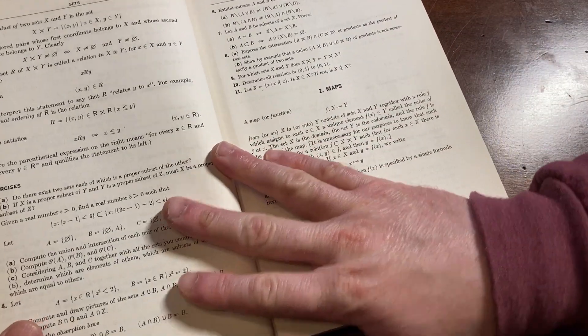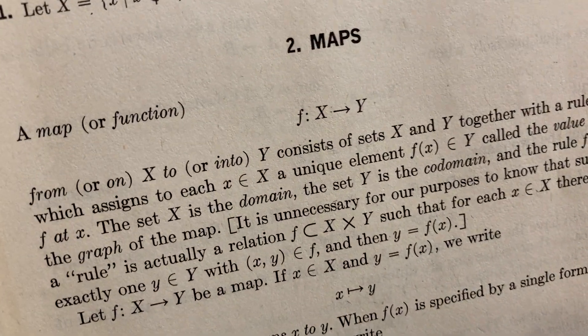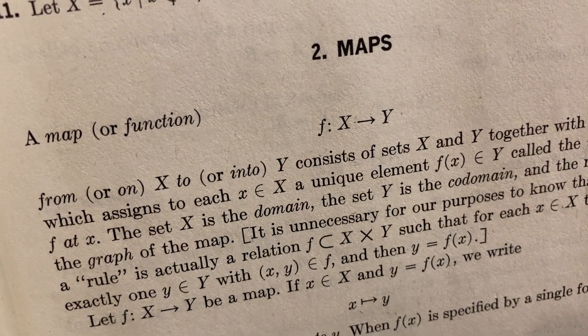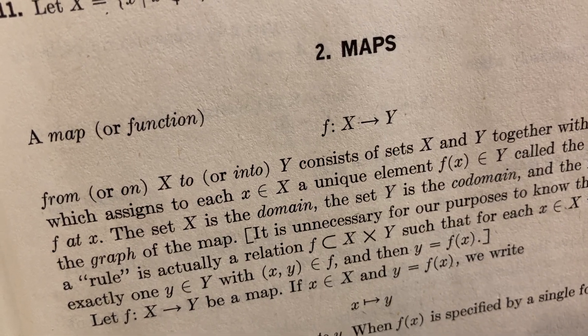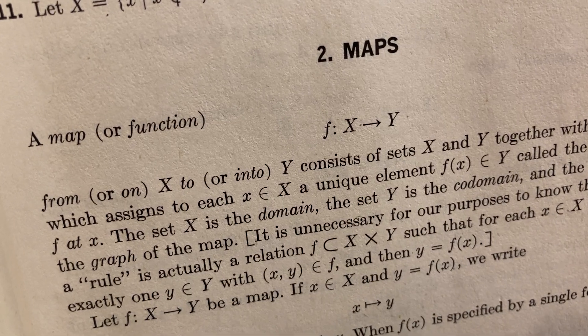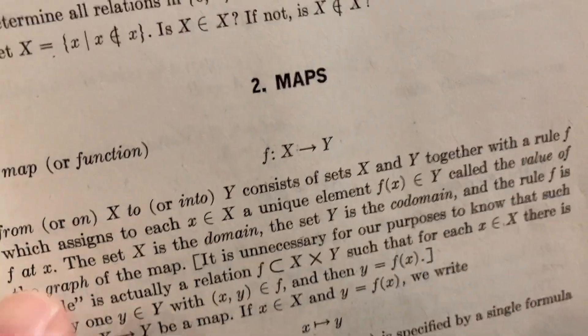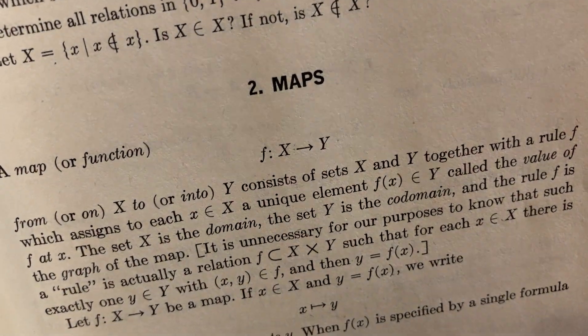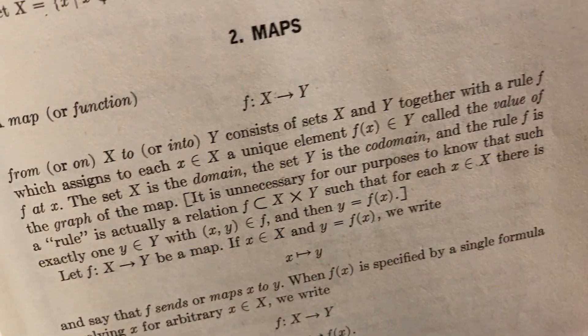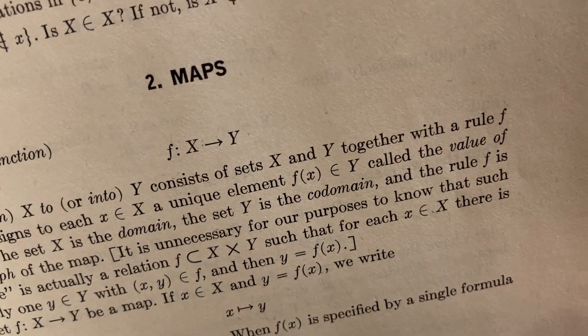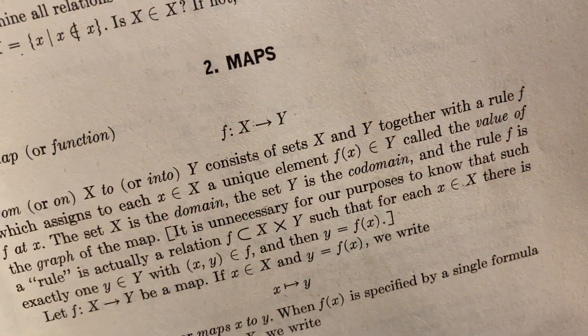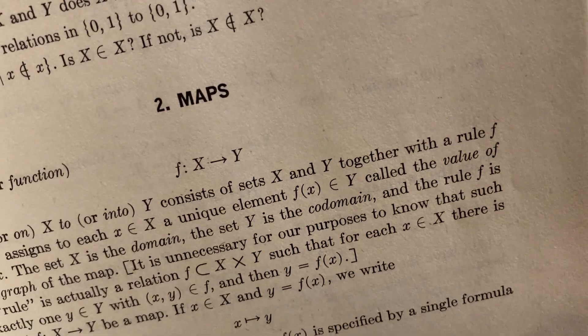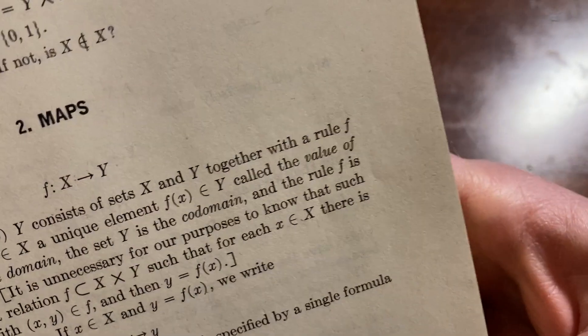Let's just open it up. Here's talking about maps. A map or function f from x to y. That's very precise - from or on. A map from x to y, or a map on x. Right. Or into x to y. I like how it says, it gives you options - into, to, or into. You don't want to say onto. It consists of sets x and y together with a rule f, which assigns to each little x in big x a unique element f of x in y, called the value of f at x. Perfect. The set x is the domain. The set y is the codomain. And the rule f.